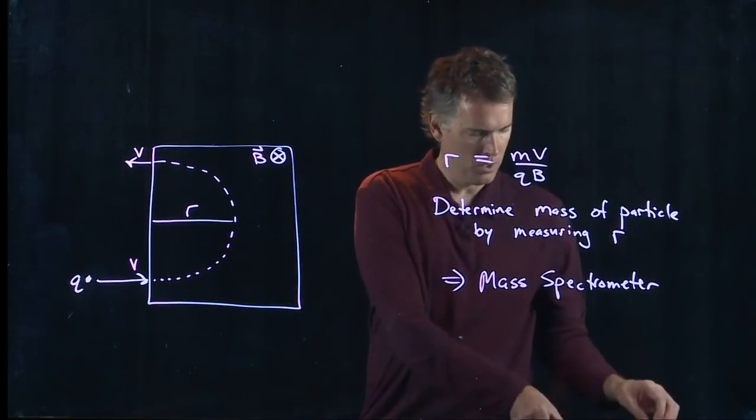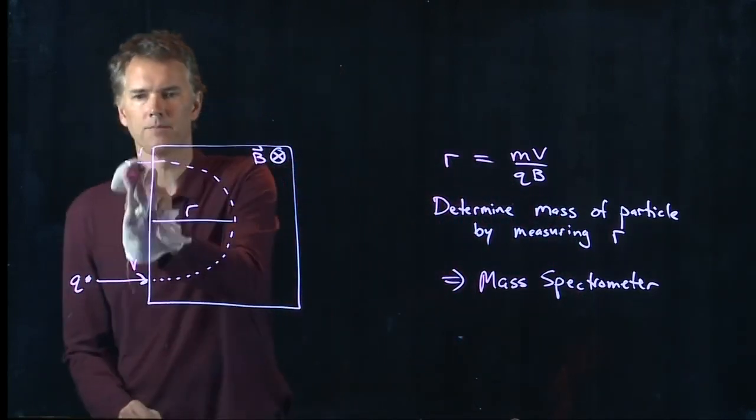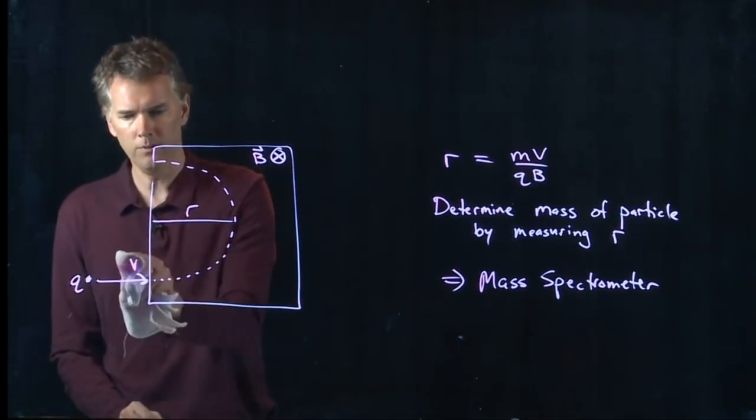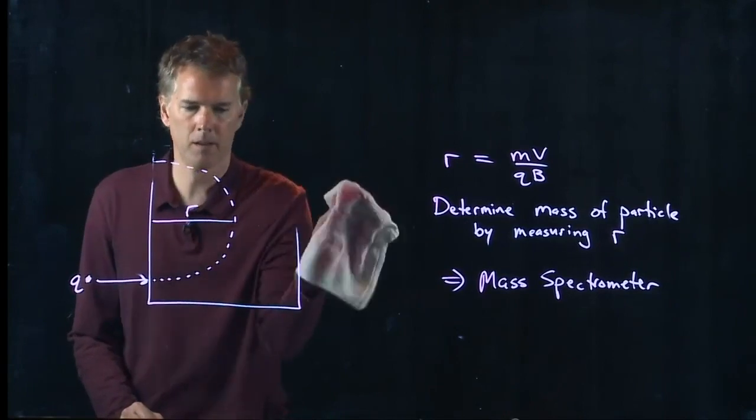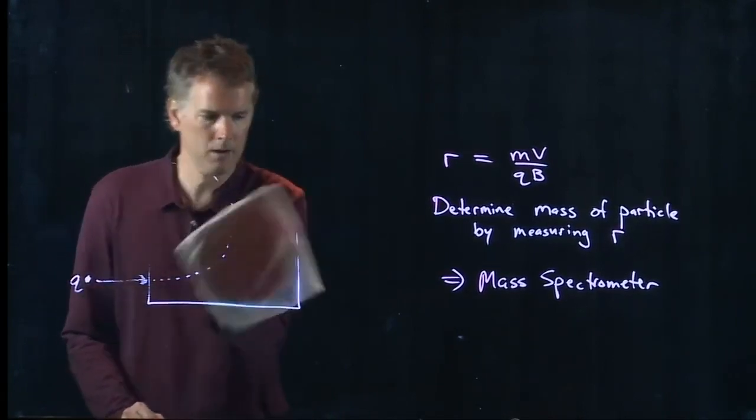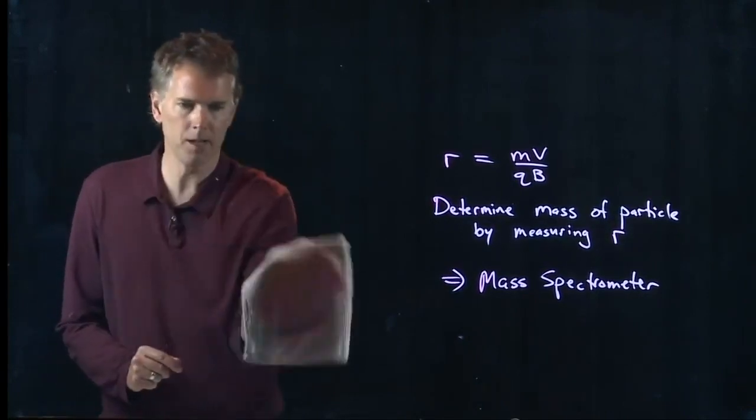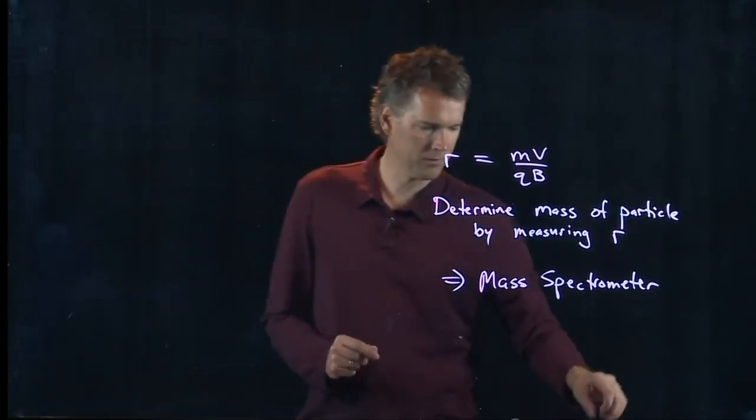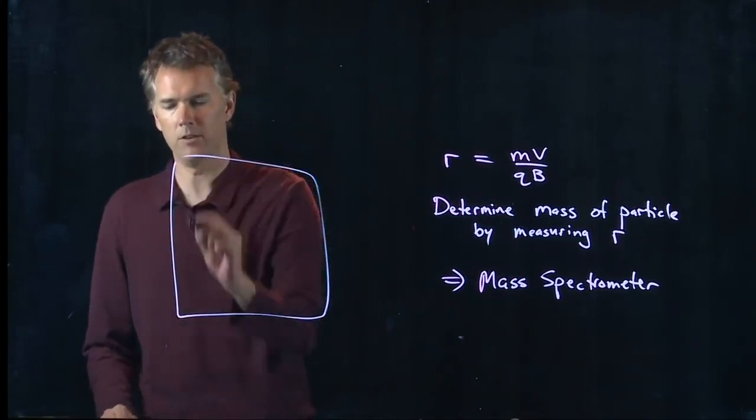Why is that important? Why do you want to measure the mass of something? Well let's say we do the following experiment. Let's do our mass spec but now we have two different objects of two different mass. Here's our region of magnetic field.